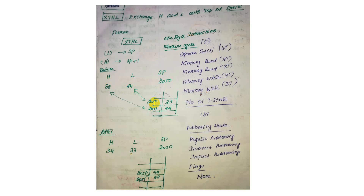If you look at a particular address, you will see what content is in that address. We exchange the H register data. For example, H contains 34 and the stack pointer points to address 88. After execution, the instruction exchanges the data — H becomes the stack data and the stack gets 34.